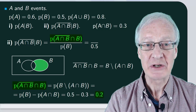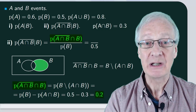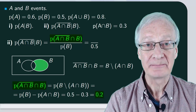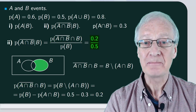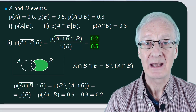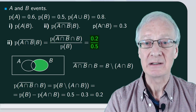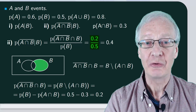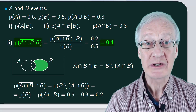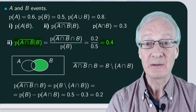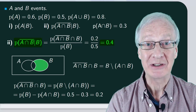We substitute this probability on top, do the division, and we get 0.4 as a result, which is the probability we wanted to calculate.